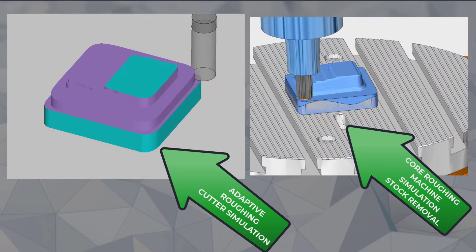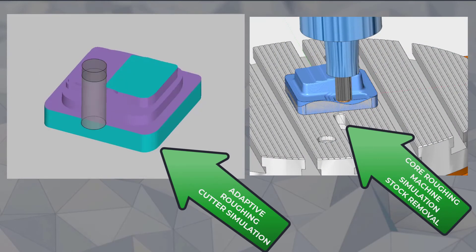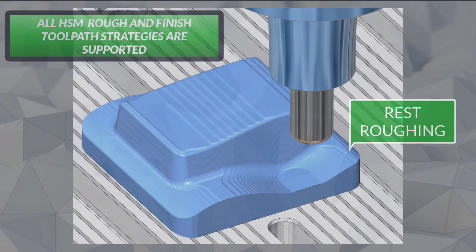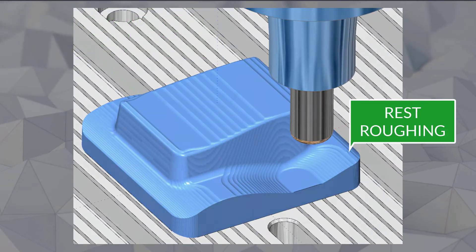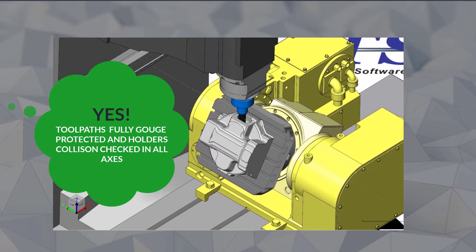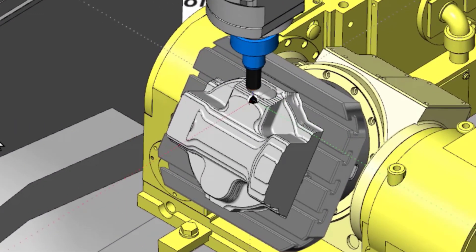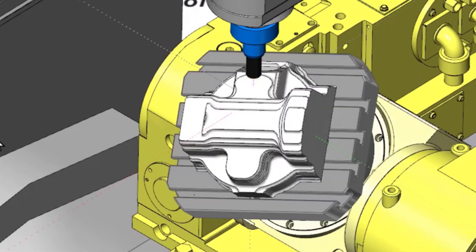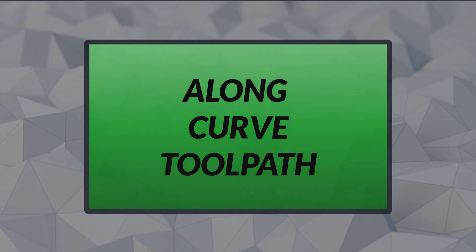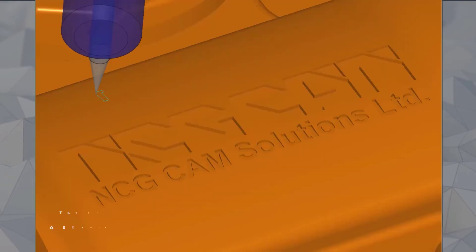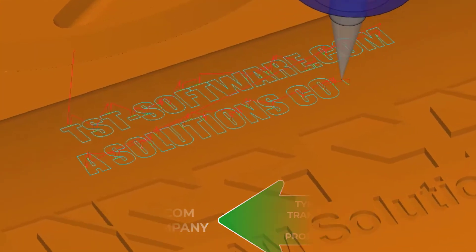This next clip shows two high speed machining roughing strategies. As shown in this video clip with the machine kinematics simulation, the cutting tool holder combo safely moves away from all obstacles. And a long curve tool path is created to engrave lettering.